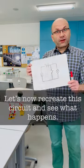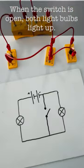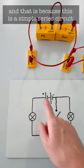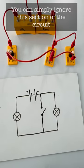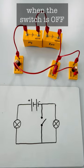Let's now recreate the circuit and see what happens. When the switch is open both light bulbs light up and that is because this is a simple series circuit. You can simply ignore this section of the circuit when the switch is off or open.